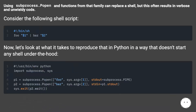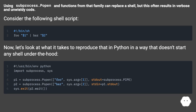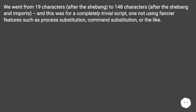Using subprocess.Popen and functions from that family can replace a shell, but this often results in verbose and unwieldy code. Consider the following shell script. Let's look at what it takes to reproduce that in Python in a way that doesn't start any shell under the hood. We went from 19 characters after the shebang to 148 characters after the shebang and imports, and this was for a completely trivial script — one not using fancier features such as process substitution, command substitution, or the like.